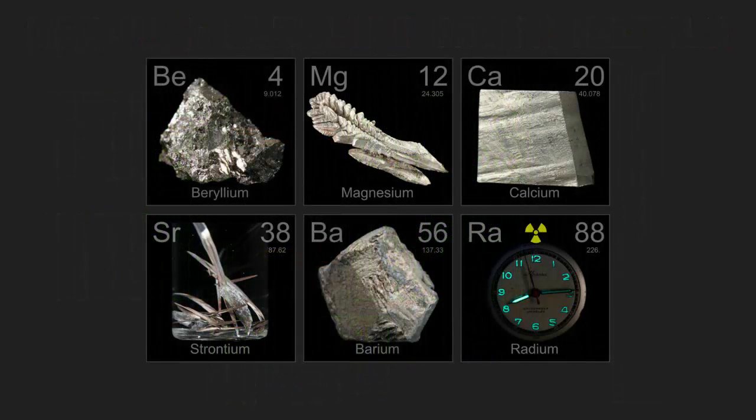Here are some examples of what they look like in real life. Radium does not come in the clock form — it's that glowing color that you see on the clocks, and it is very radioactive.